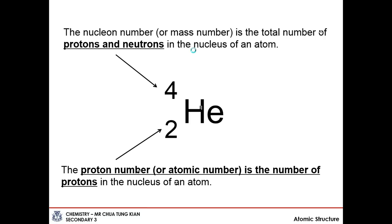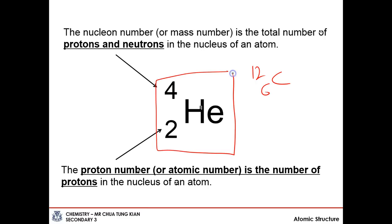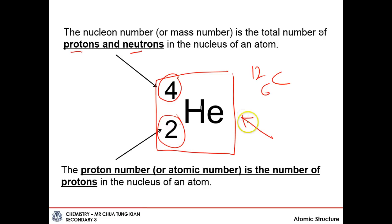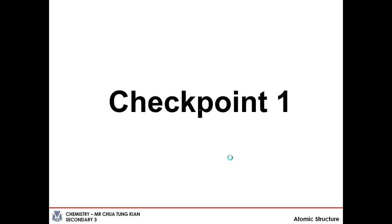This is how carbon-12 is represented in chemistry: C-12-6. On top is the mass number or nucleon number, which counts the number of protons and neutrons in the nucleus of an atom. The bottom number is the proton number, and for an electrically neutral atom, this number is also equal to the number of electrons. So 2 positive charges and 2 negative charges give an overall charge of zero. Let's now attempt checkpoint 1 in your notes — pause the video to attempt it, then continue once you are done.